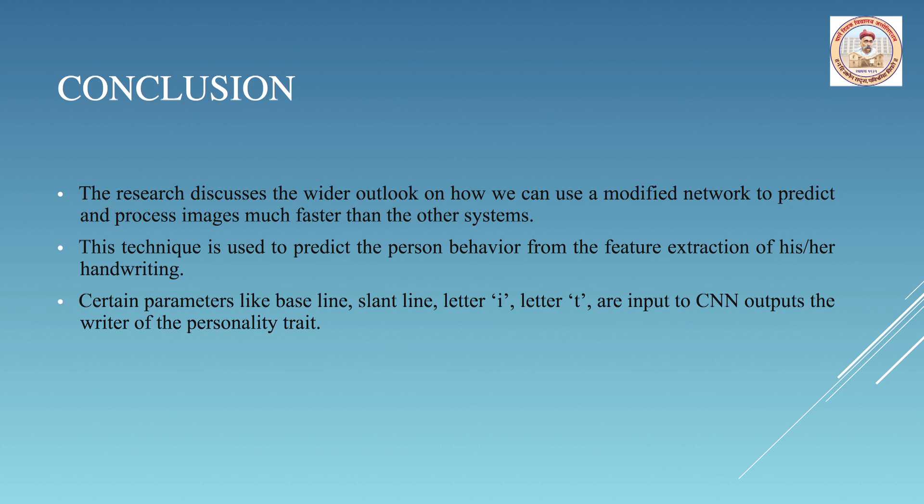The research discusses how we can use a modified network to predict and process images much faster than other systems. This technique is used to predict the person's behavior from feature extraction of their handwriting. Parameters like baseline, slant line, the dot on letters like lowercase i, the bar of letter t, are input to CNN, which outputs the writer's personality traits. There is no such thing as bad handwriting — it is all about how you write an alphabet: its strokes, curves, spacing between words, and whether letters are connected or disconnected. This is what defines you.